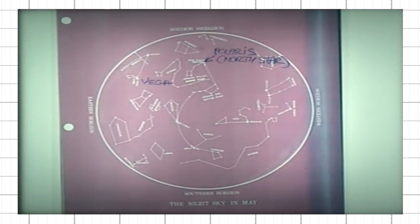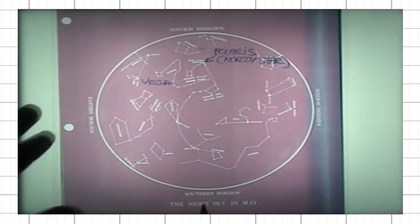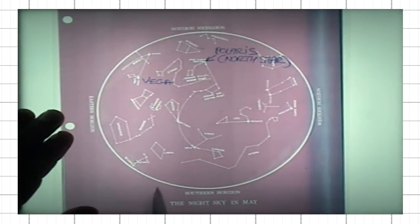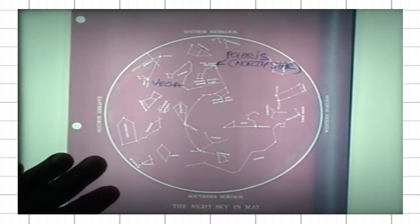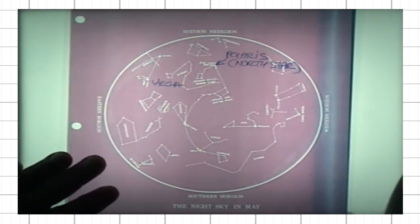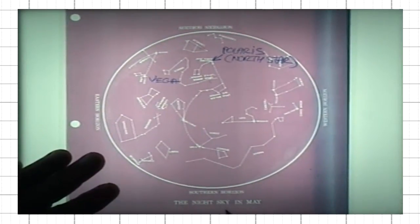Again, I've oriented this chart as if I'm looking south towards the southern horizon. East is there, west is there. This is the night sky in May.